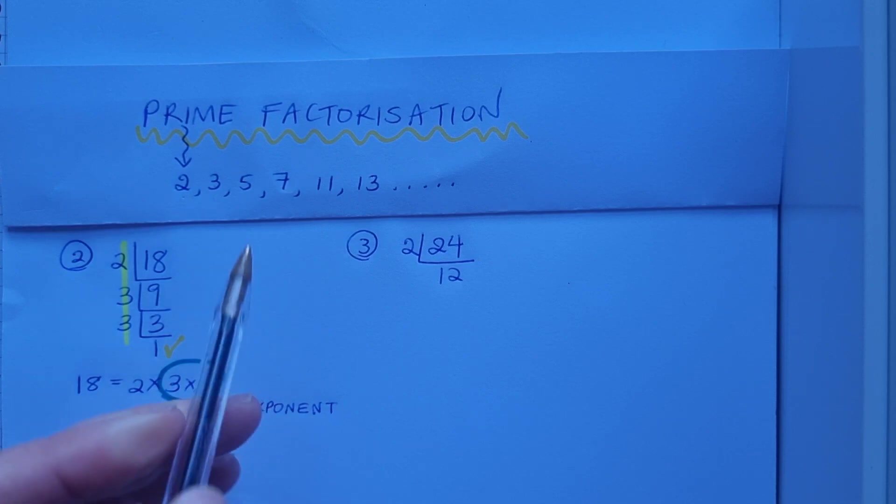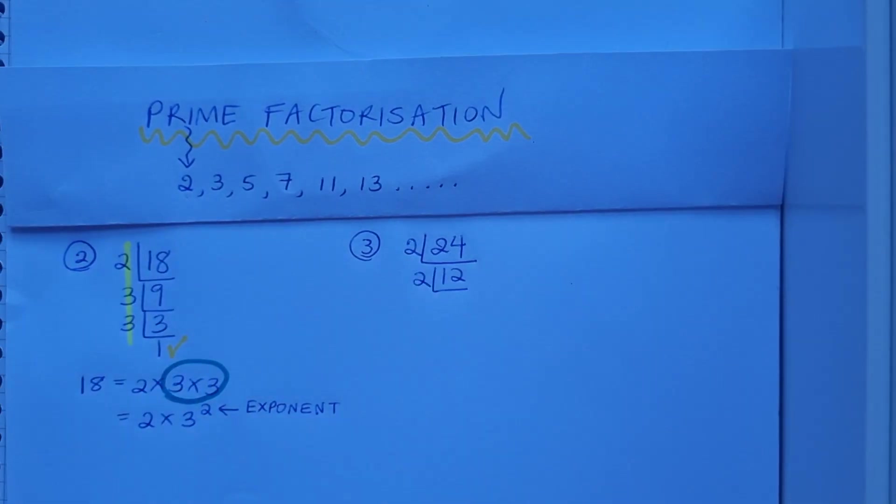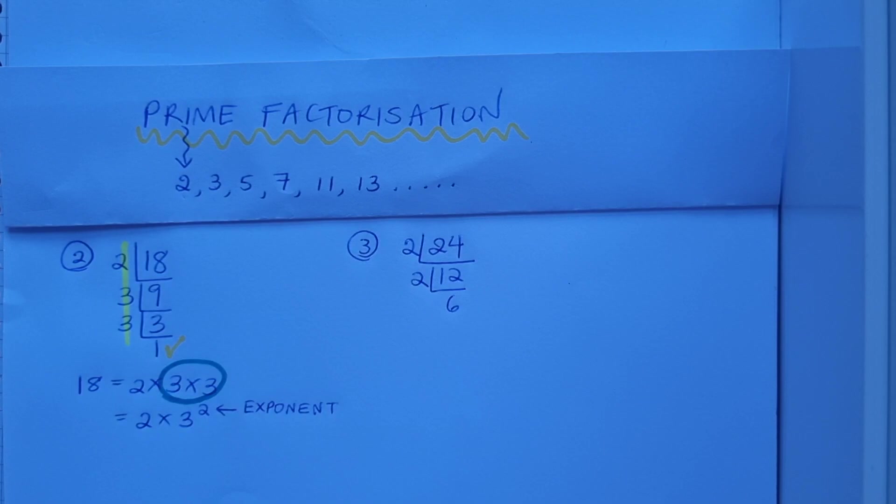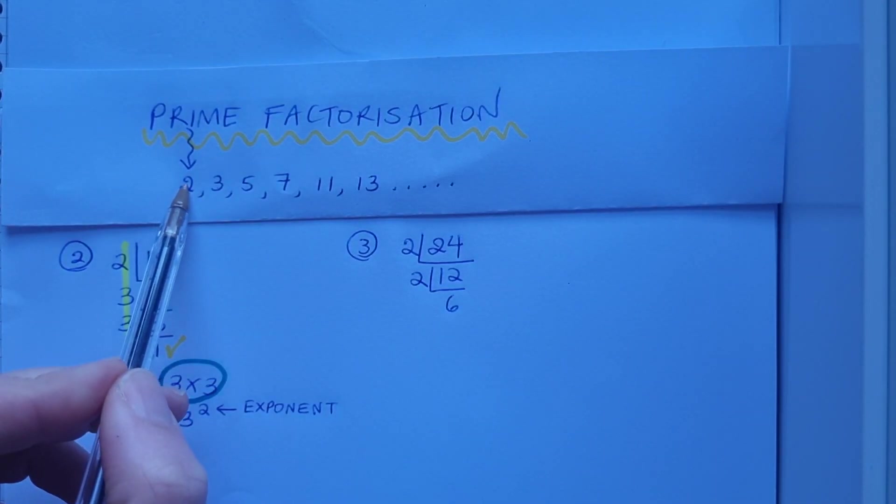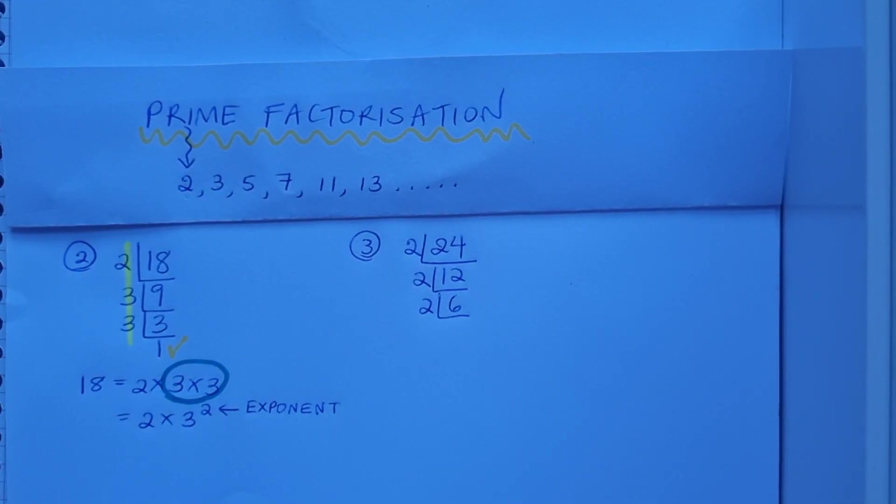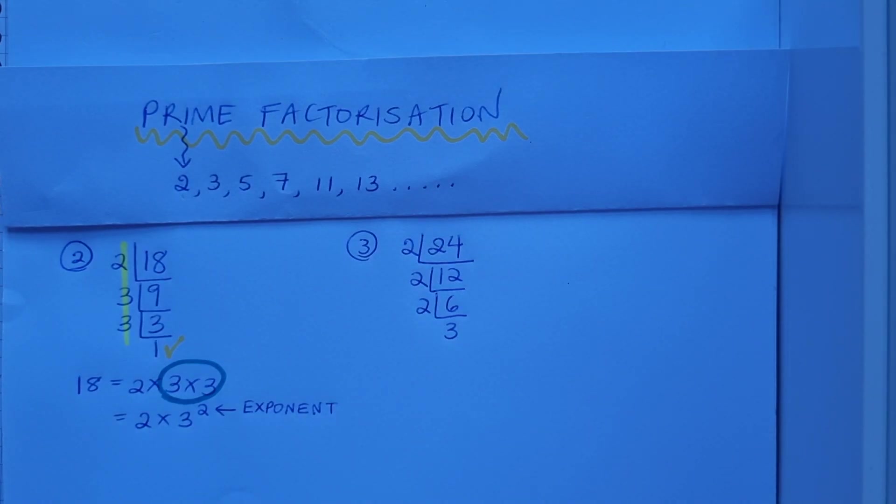I need to go again. Looking at the list, 2 will go into 12 again, and it'll go in 6 times. Can I go again? Yeah, actually 2 will go into 6 also, and it'll go in 3 times. I'm not there yet because I haven't got down to 1.